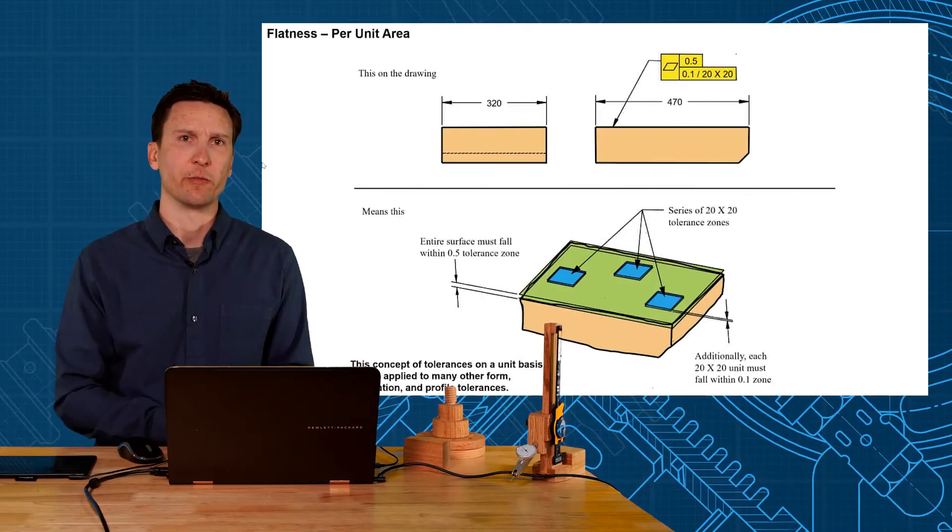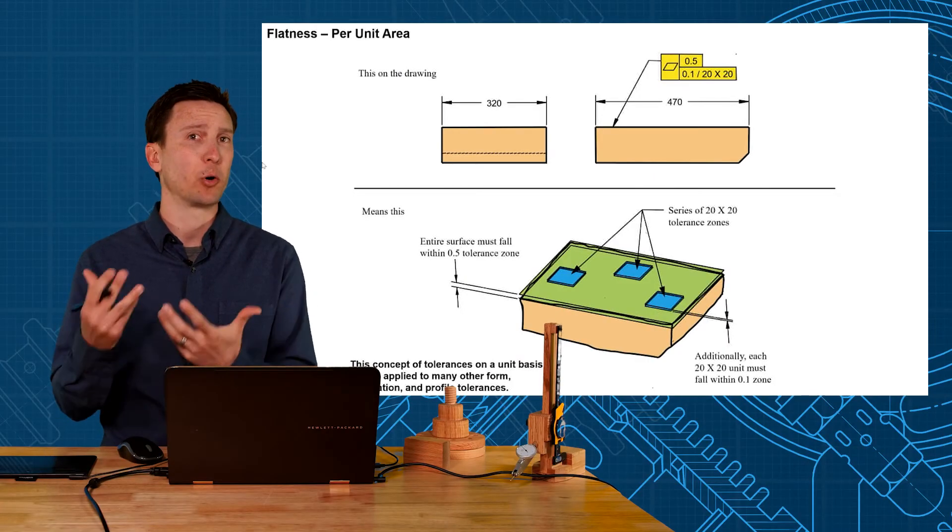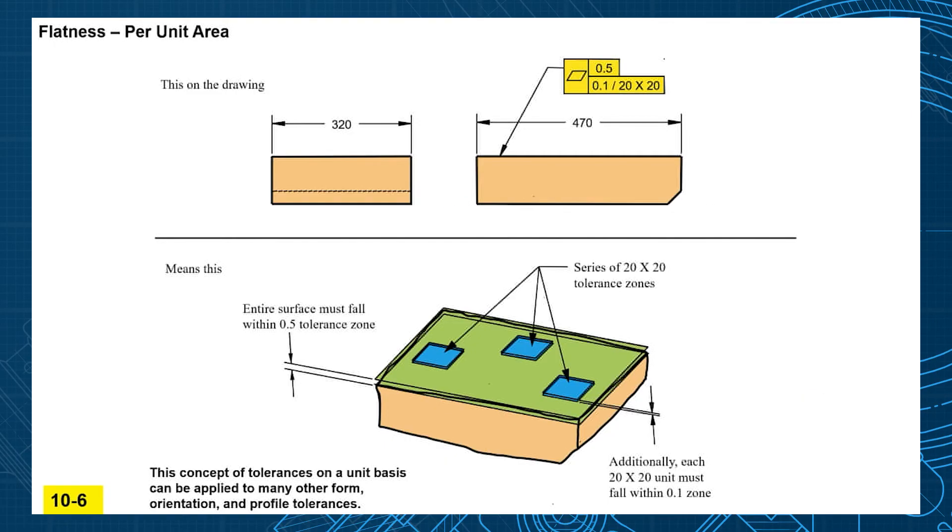Let me show you another thing you can do with flatness tolerance here, you can apply it per unit area. So here we have a relatively large surface, 470 millimeters by 320 millimeters, and let's say we want the surface to be flat within 0.5. So that 0.5 flatness tolerance creates a tolerance zone of half a millimeter wide and allows the surface to be concave, convex, or even could be wavy. Now even though the flatness could be 0.5, notice how that area could bump out in a small distance, a small portion of that.